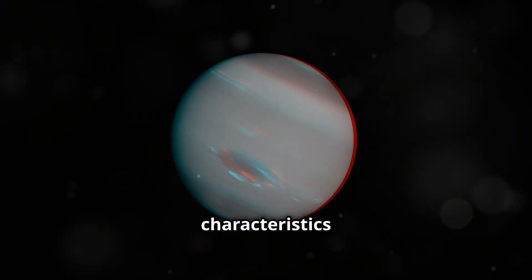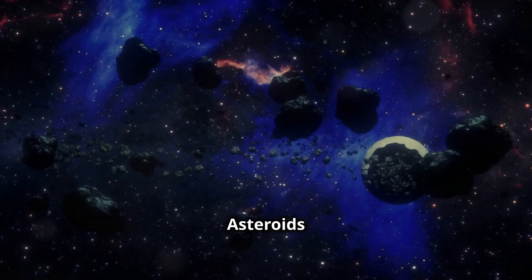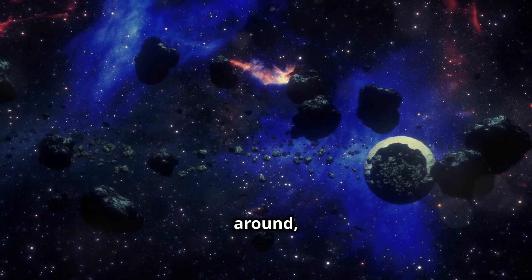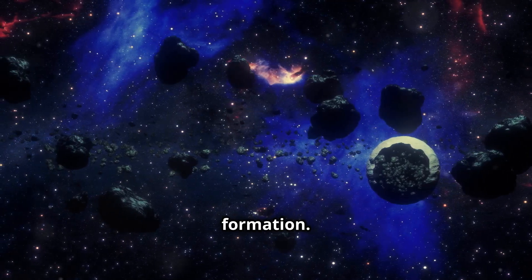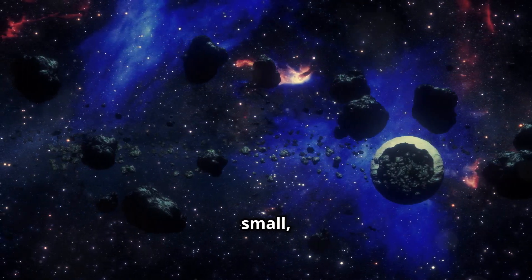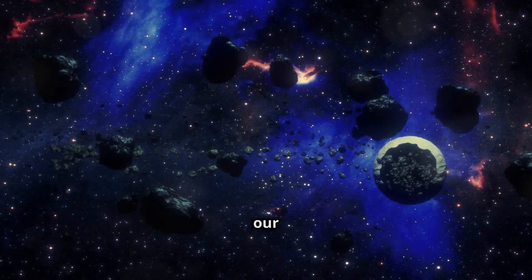Each planet has its own unique characteristics and mysteries. Asteroids and comets zip around, remnants of the solar system's formation. These celestial bodies, though small, hold clues to the early days of our solar system.